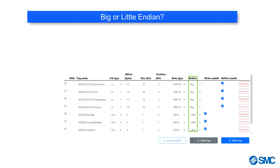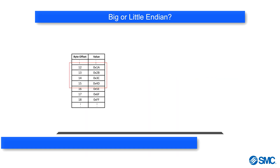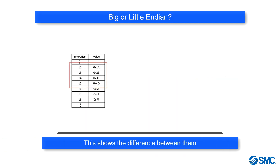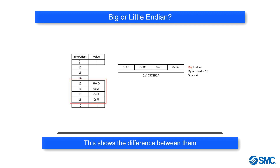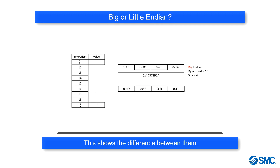We have the option to select if the data is big or little endian. This animation shows an example of the difference between the two — this is big endian, and this is little endian.